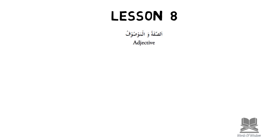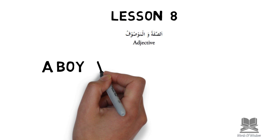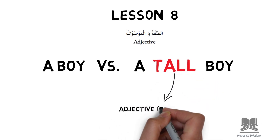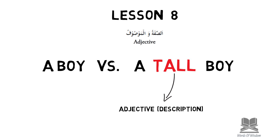Let's begin with an example just to ease ourselves into this concept. If I was to say 'a boy' and 'a tall boy', what is the difference between the two sentences? In the second sentence I have described the boy using a descriptive word, which in English is known as an adjective. In Arabic, the adjective is known as a sifa, and the person or thing you are describing is known as a musuf.